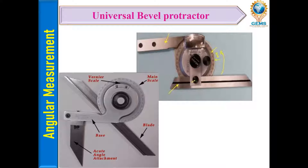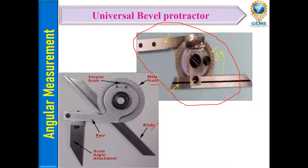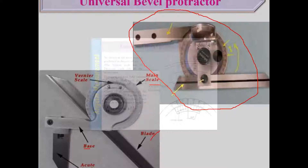Looking at the actual figure of the universal bevel protractor — which is also available in the laboratory — you can see the acute angle attachment, the base, the blade, the vernier scale, and the main scale. The blade is locked by the locking nut. These are the four main parts of the bevel protractor.